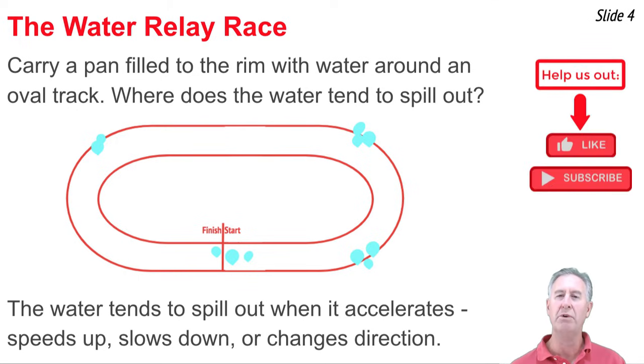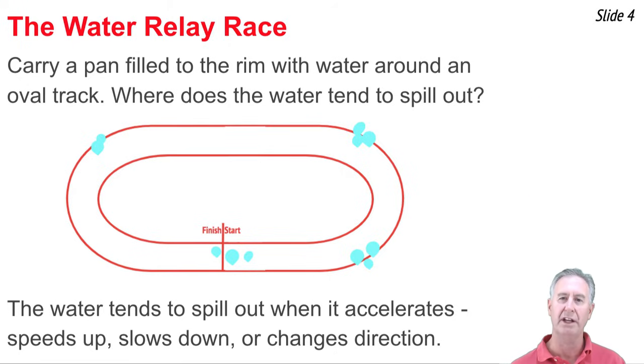Well, the water spills over the rim of the container whenever you try to accelerate the water, whenever you try to change its state of motion or its velocity. It does it upon starting at the start line. The water wants to stay right there as you speed up the pan. It does it at the finish line when you try to bring the pan to a stop. The water tends to keep going, spills over the front rim of the pan, and it does it on the turns when you try to change the direction of the water.